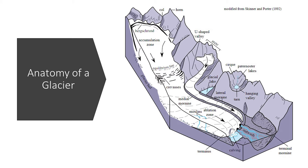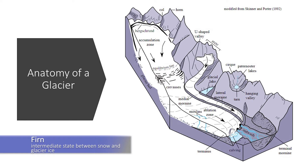Glaciers are formed when snow remains in the same area year-round, where enough snow accumulates to transform into ice. Each year, a new layer of snow compresses the previous layer. The force of compression makes the snow recrystallize into sugar-like grains. These grains become larger over time, with less space in between, causing the snow to slowly compact and increase in density. After about a year, the snow turns into an intermediate state between snow and glacier ice called firn.